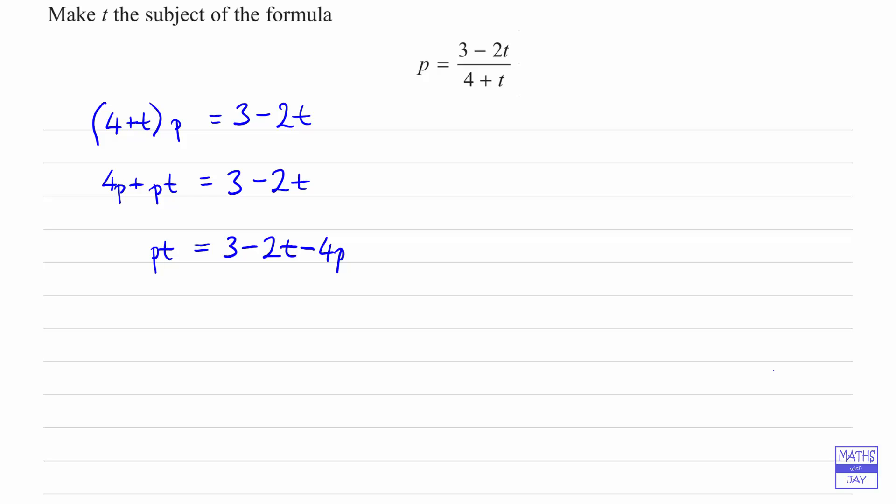So we're going to add that to both sides. So we'll have 2t plus pt on the left hand side and 3 minus 4p on the right hand side.